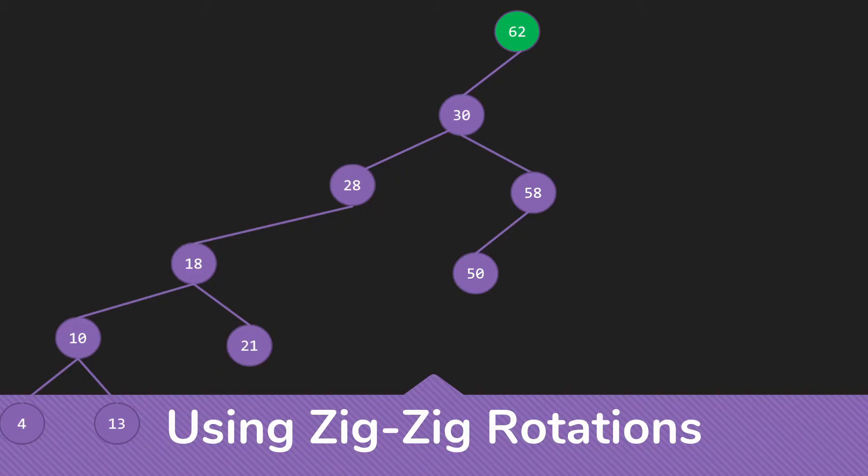So those are our three kinds of rotations. We have the single rotations, which we'll see only when we're at the very root of the tree. The double rotations, which we'll see in the same kinds of circumstances that we used them in AVL, that are the zigzag kind of rotation. And then whenever we have a grandparent that's in the same direction as the parent, we're going to use the zig-zig rotation.